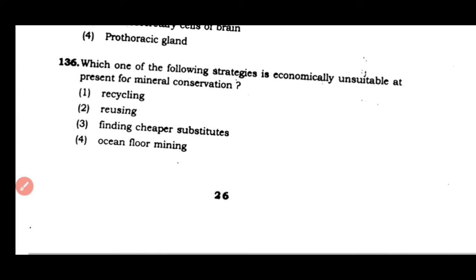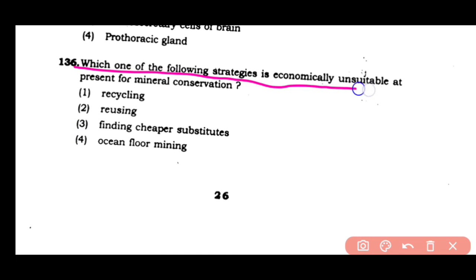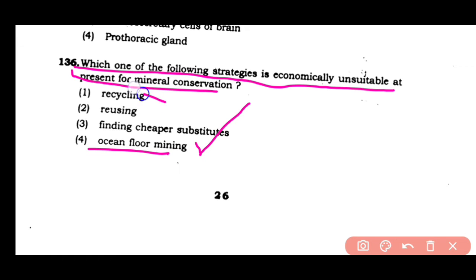Question number 136: Which one of the following strategies is economically unstable at present for mineral conservation? (1) Recycling, (2) reusing, (3) finding cheaper substitutes, (4) ocean floor mining. The correct answer is option 4. Ocean floor mining is very expensive for mineral conservation nowadays.